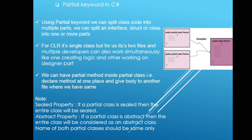We can have a partial method inside the partial class — that is, we can declare a method in one place and define that method in a different place in the same partial class. Note that when you use the sealed property, the entire class becomes sealed, and if you use the abstract property, the entire class becomes abstract. Also, the name of the partial class in both files must be the same.